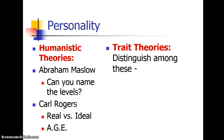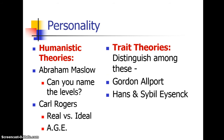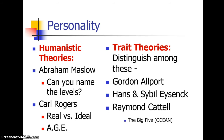Trait theories — lots of different ones. Some are reviewed from intro, such as Gordon Allport's cardinal, central, and secondary traits. Eysenck's overlapping dimensions of neuroticism and extraversion. Cattell's surface and source traits with his 16 continuums of source traits. And the Big Five, which was not covered in intro: openness, conscientiousness, extroversion, agreeableness, and neuroticism — know the differences and what each means.